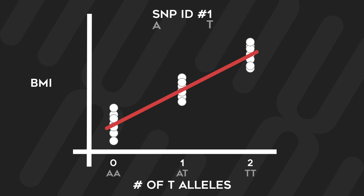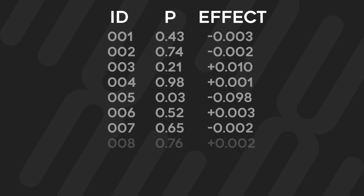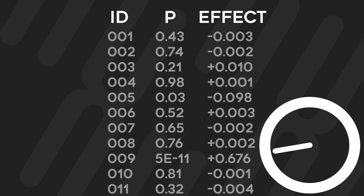For each SNP, the p-value calculated is recorded as well as the slope of the regression line, which is also known as the effect size. This regression analysis repeats for every single SNP in the dataset. When you are working with millions of SNPs, this will often take hours, if not days, for a computer to accomplish.